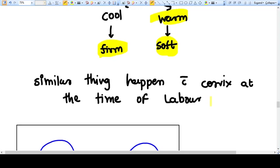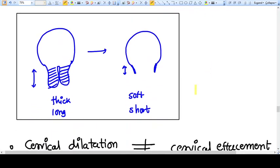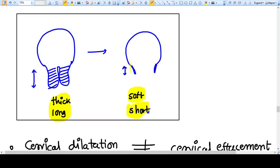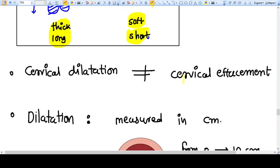At the time of labor, a thick long cervix in non-labor uterus becomes soft and shorter in labor. So here one thing is very important you to know: cervical dilatation is not equal to cervical effacement.